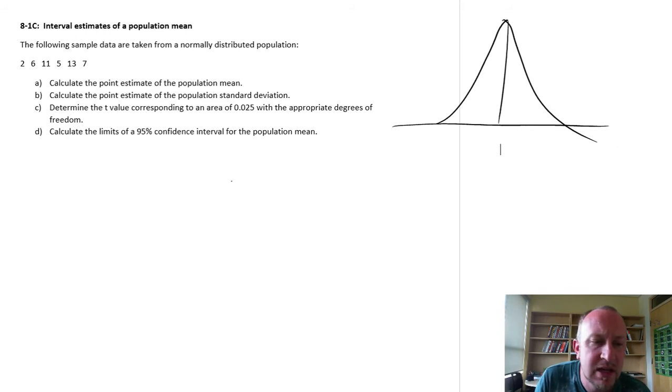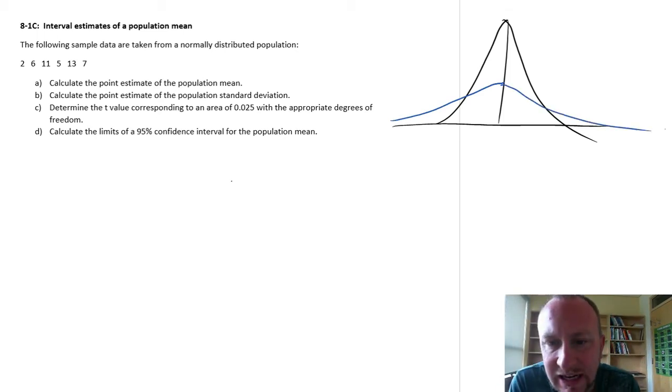Something like this, tall and skinny. As that sample size gets smaller and smaller and smaller, the t-distribution changes shape. And so as it gets smaller, the t-distribution will get shorter and fatter.